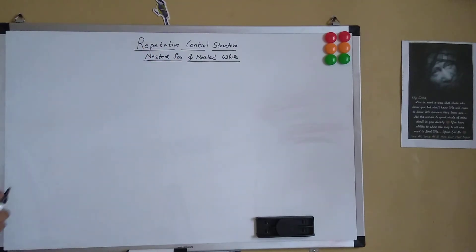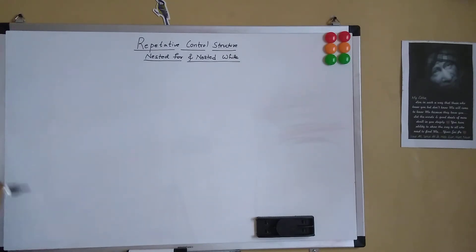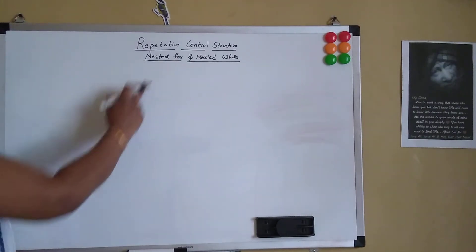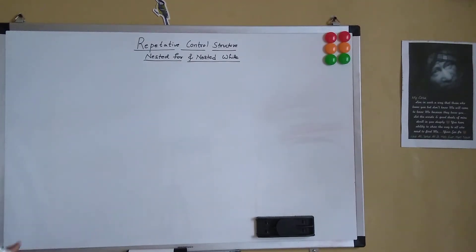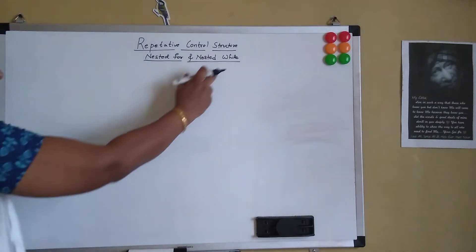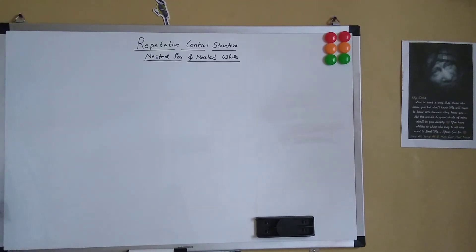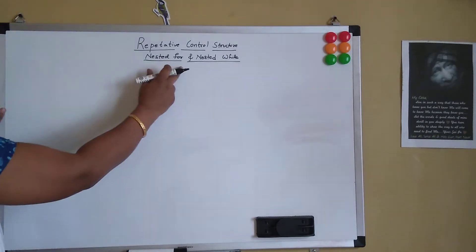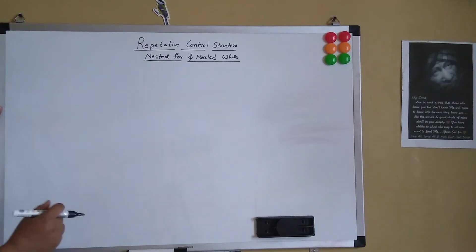So what do you mean by nested for? Nested for is just like a nested if — one if within an if. So this is nothing but one for loop within another for loop. And nested while is nothing but one while loop within which there is another while loop. Now let's look into some code examples of how nested for works in Python.